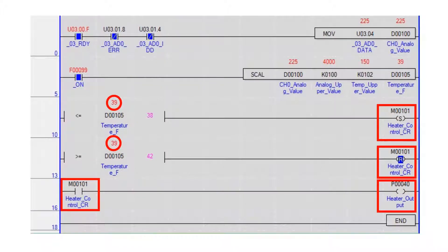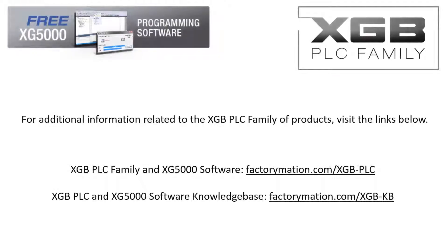In conclusion, the program uses an analog signal from a span temperature signal conditioner and controls a heater to maintain a temperature between 38 and 42 degrees. For additional information related to the XGB PLC family of products, visit the links below.